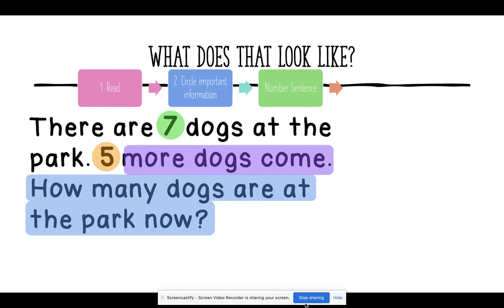More dogs come means I'm going to add because we are making more. And we are making more by five because five is the change. So it would look like this: seven plus five equals blank.